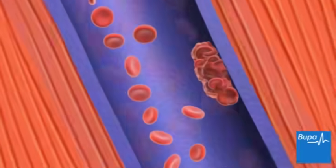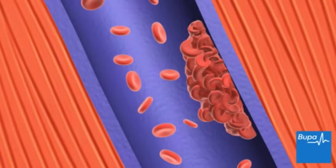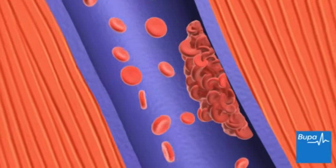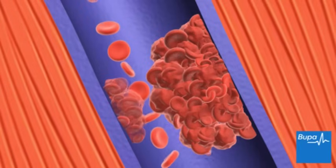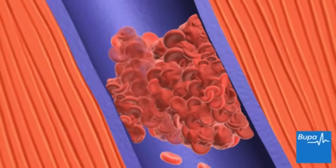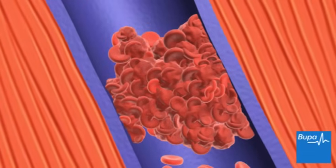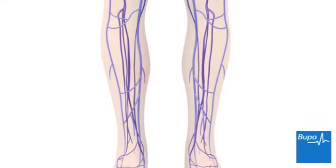Sometimes a larger blood clot can form. A larger clot can completely block the flow of blood through the vein. Here we show the blood clot growing larger. A large blood clot may cause pain and swelling in the affected leg. However, DVT doesn't always cause symptoms.